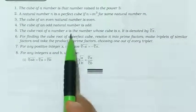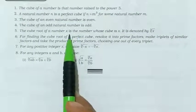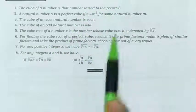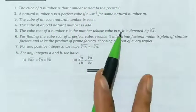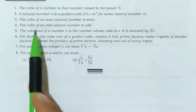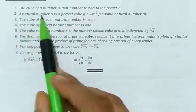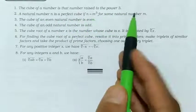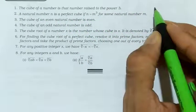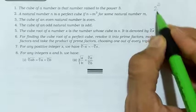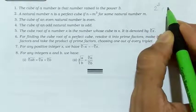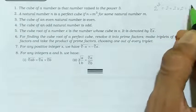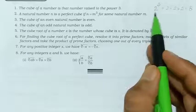Hello, my dear students. In this video we will discuss Class 8 maths chapter: cubes and cube roots — very important points for revision. The first point is: the cube of a number is that number raised to the power 3. Like, 2 cube means 2 raised to the power 3, which is 2 × 2 × 2, that is 8.